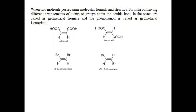This means that if the molecular formula is the same and the structural formula is the same, but if the arrangement of atoms or groups of atoms around the carbon-carbon double bond is different, then these two molecules are called geometrical isomers of each other and the phenomenon is called geometrical isomerism.